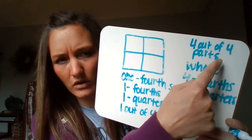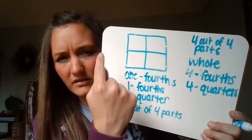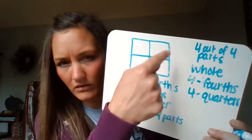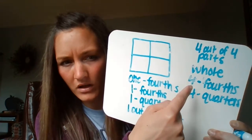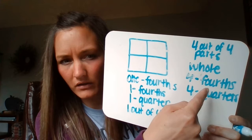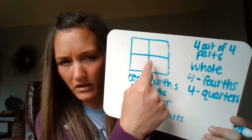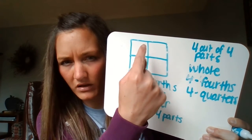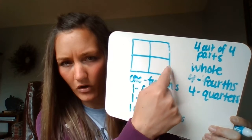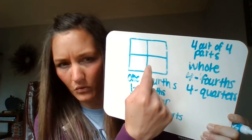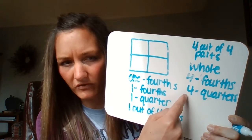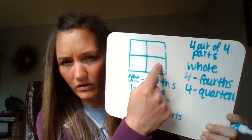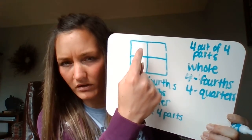So over here, four out of four parts because I'm using the whole thing. One whole. Four fourths, because this is a fourth, fourth, fourth, fourth. So now I'm using all four fourths, or four quarters.